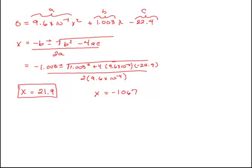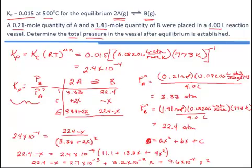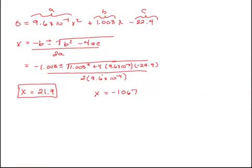So then we can come up with actual values, but let's think why. Whenever we solve for x, it's tempting to stop because you've done a lot of work. But you have to look at what the question is asking. It is asking us to determine the total pressure in the vessel. The total pressure in the vessel would be the pressure of A plus the pressure of B. That's what Dalton's Law of Partial Pressure says. The pressure of A should be 3.33 plus 2 times our x value, which is 21.9, and that gives us a pressure of A of 47.1 atmospheres.